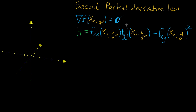Hey everyone. In the last video I introduced the second partial derivative test. If you have a two-variable function f(x, y) that outputs a number, when you're looking for places where it has a local maximum or local minimum, the first step is to find where the gradient equals zero. These are called critical points or stable points, and it's a compact way of writing that all the partial derivatives are equal to zero.